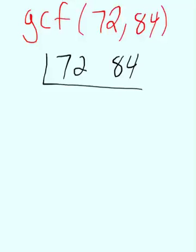Well, they're both even, so I can divide by 2. 2 goes into 72, 36 times. 2 goes into 84, 42 times.